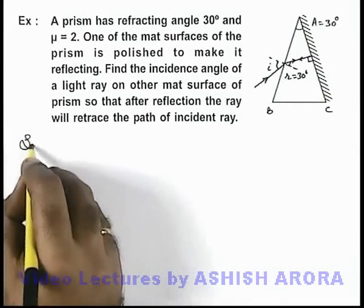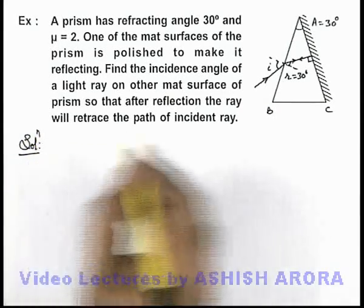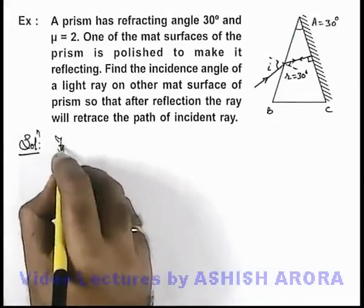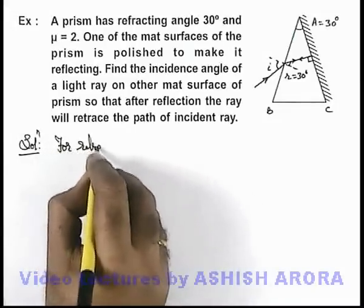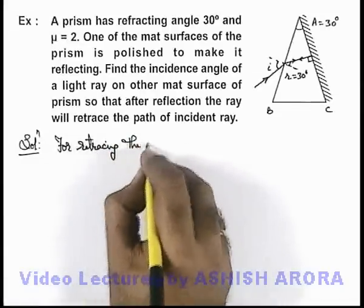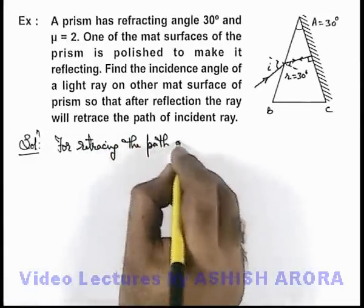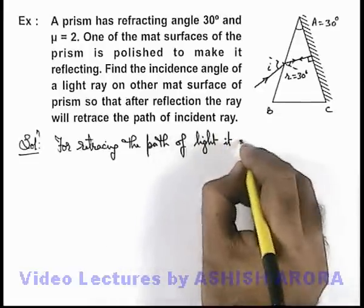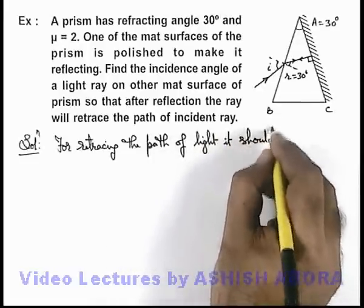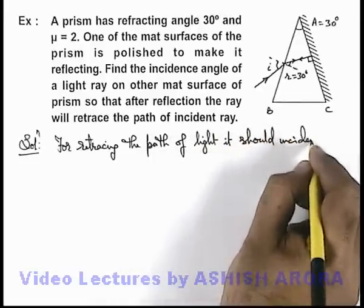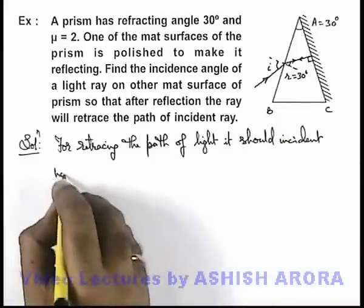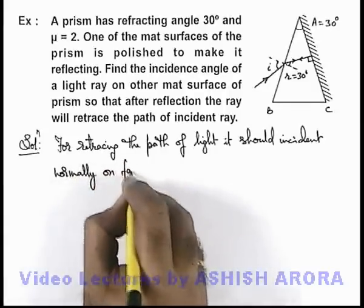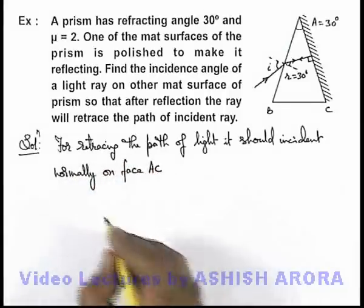So here we can solve the problem based on the analysis we have just done. For retracing the path of light, it should be incident normally on face AC of the prism.